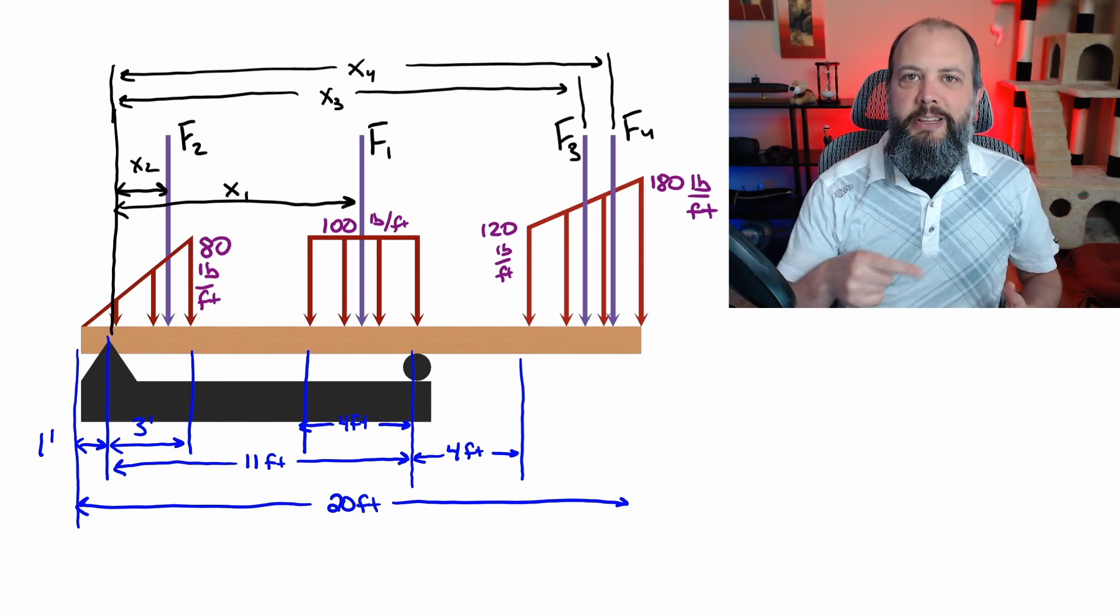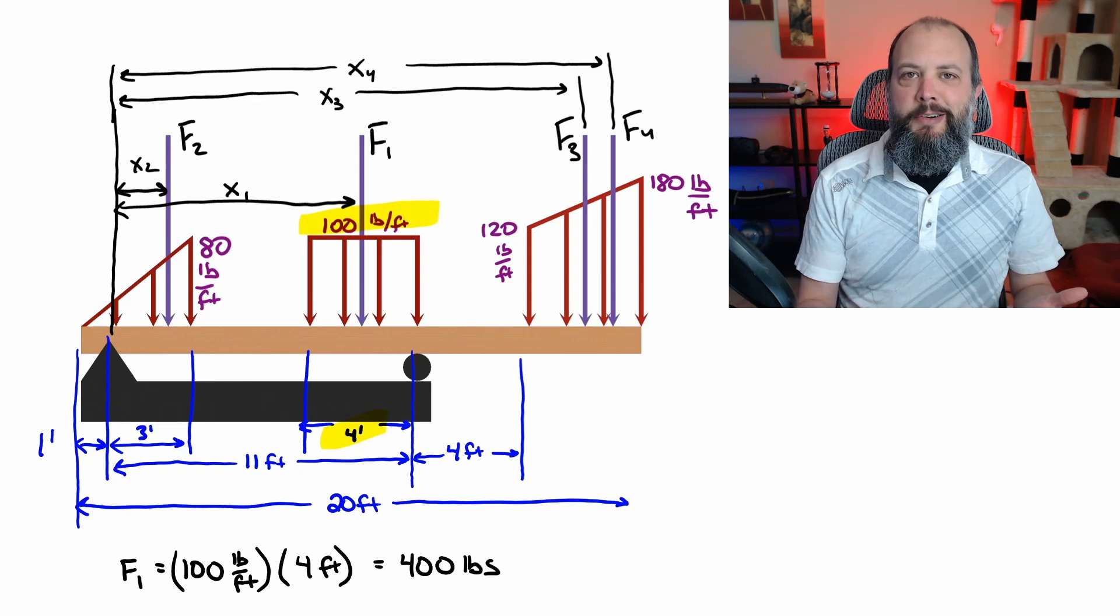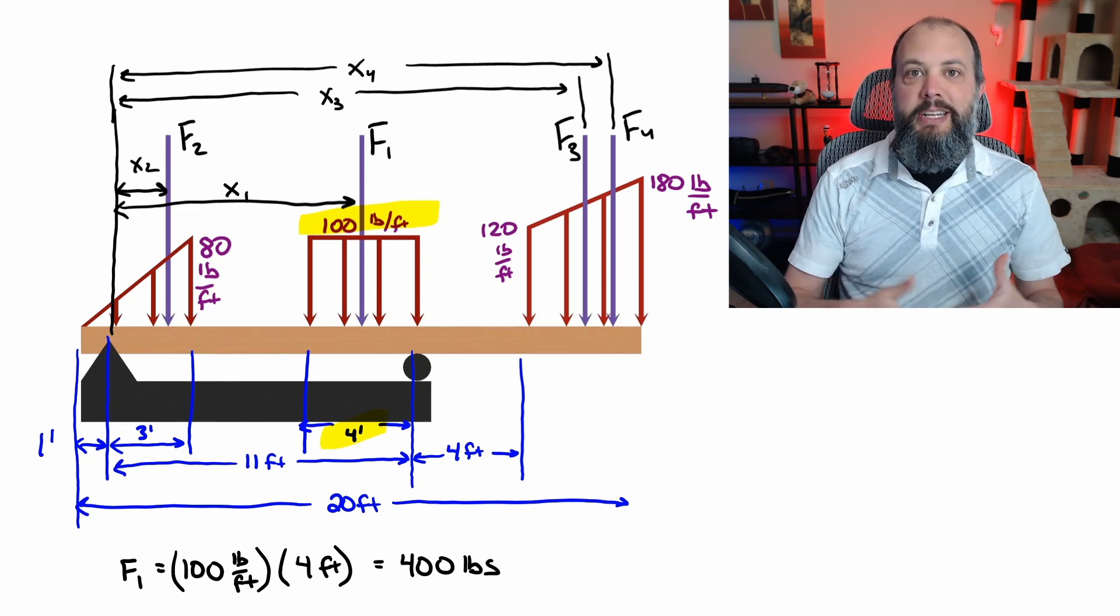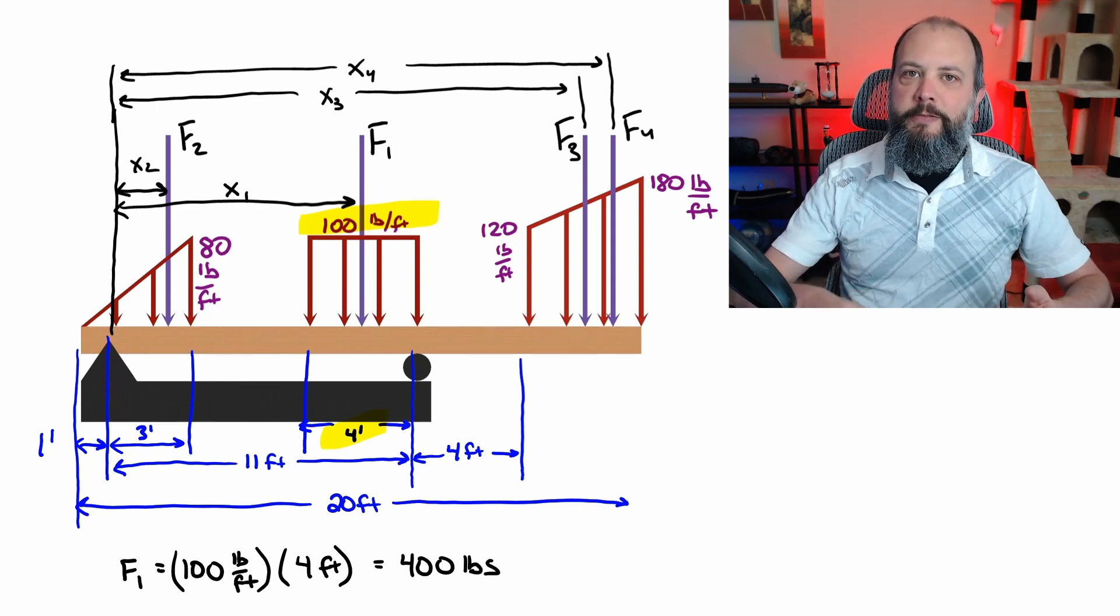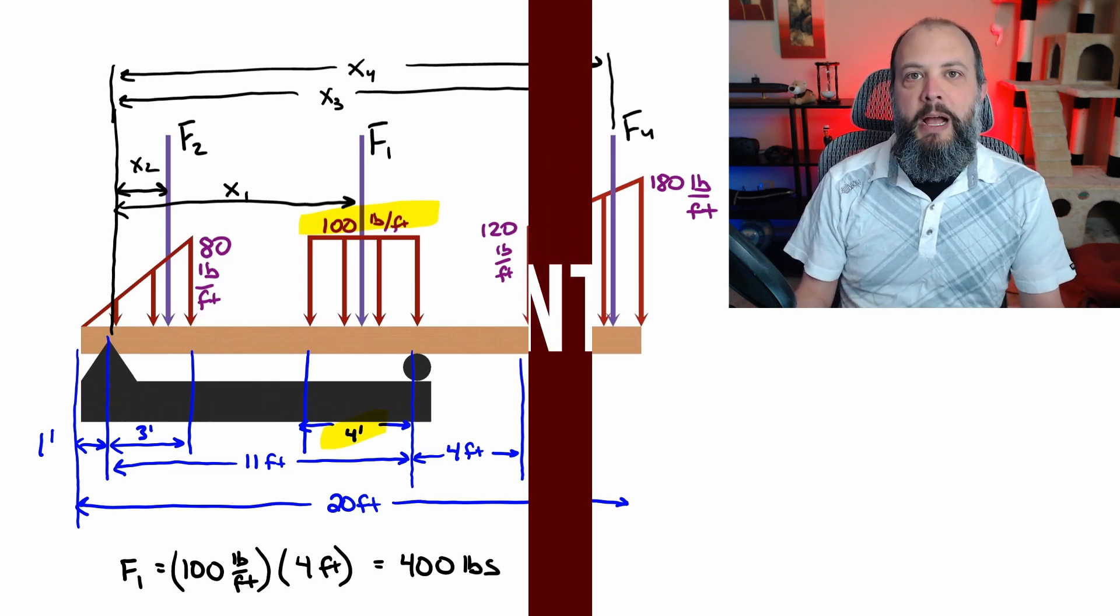Let's do the rectangle first, then the triangle, then the trapezoid last. Distributed load one is the rectangle in the center. Area of a rectangle is base times height. So 100 pounds per foot times the width of four feet gives a magnitude for F1 of 400 pounds.